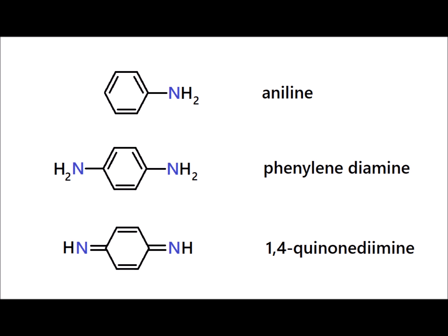At the top we see the monomer aniline — an aminobenzene. When we start to add amine groups, notice that in phenylenediamine we have two amino groups paired to each other. If we oxidize that moiety, we can oxidize it to a 1,4-quinone diamine. The quinone form and the benzenoid form have different energies, and that's one of the keys we exploit in electrically conducting polymers.